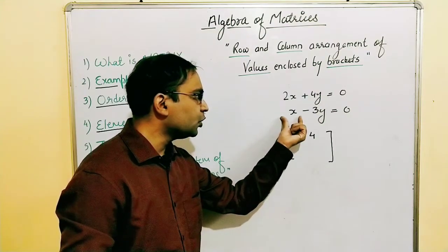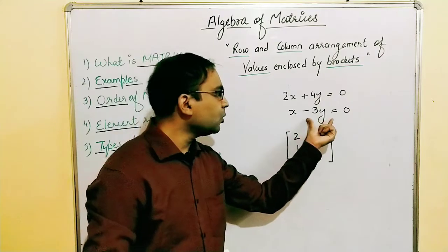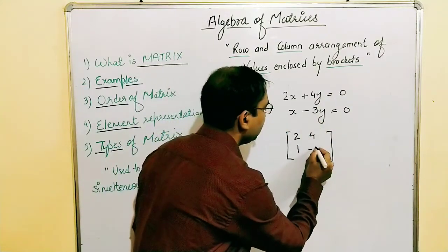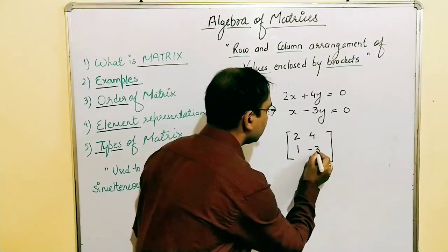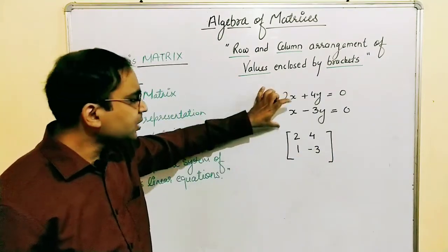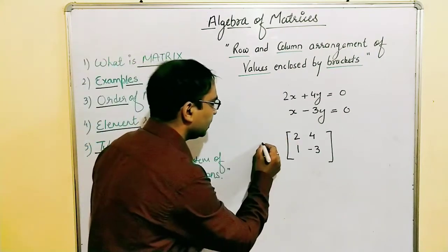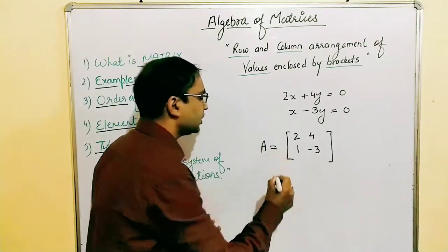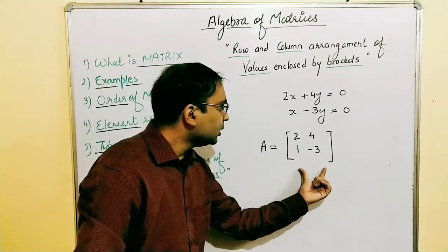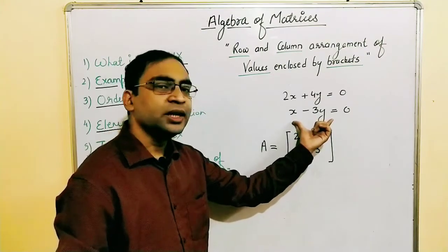And what is the coefficient of y in equation 2? It is −3. So we represent −3. You can see this system of equations is represented by this matrix. We represent it with capital A. So this capital A represents a matrix which is indirectly representing this simultaneous linear equation.